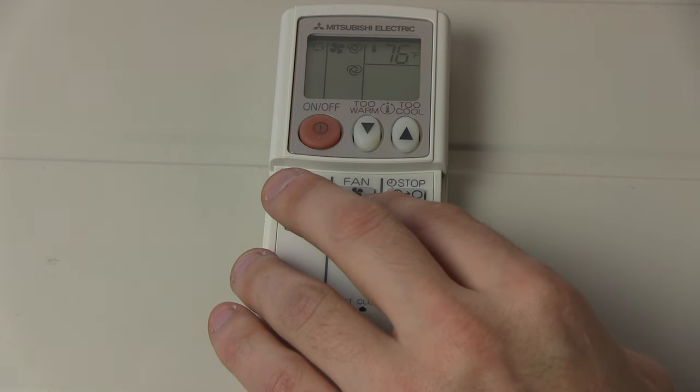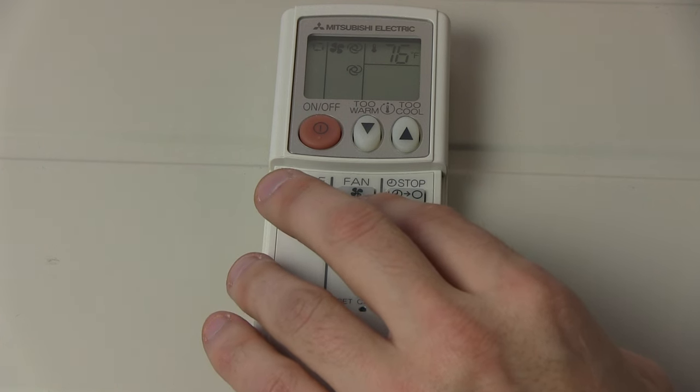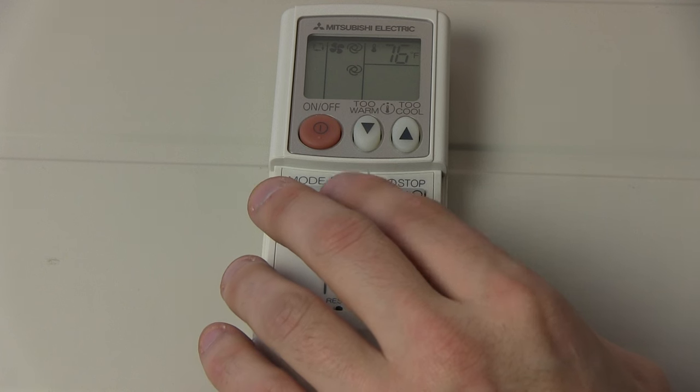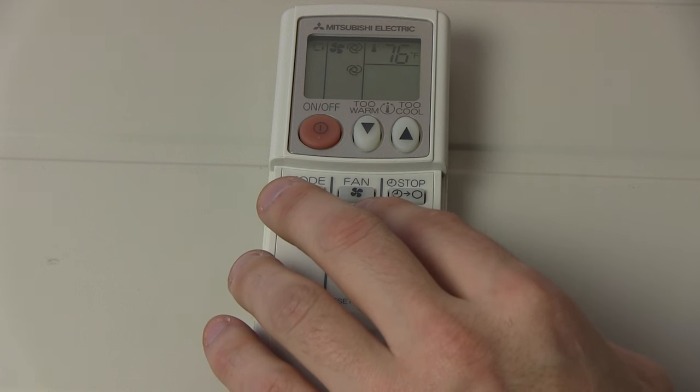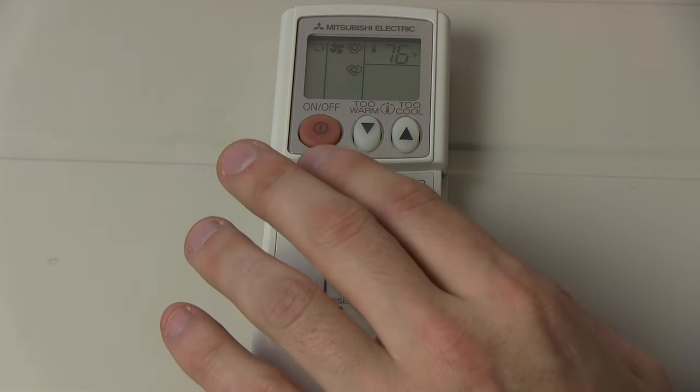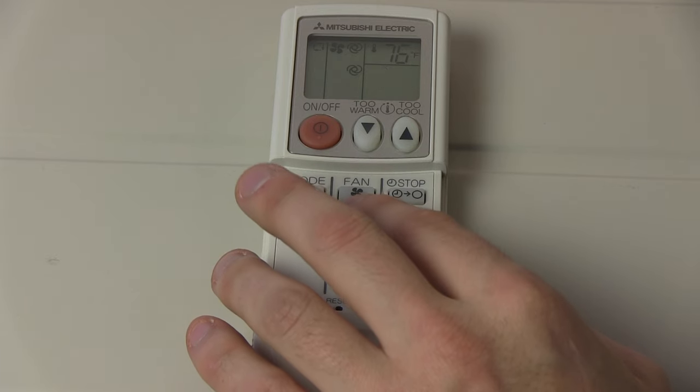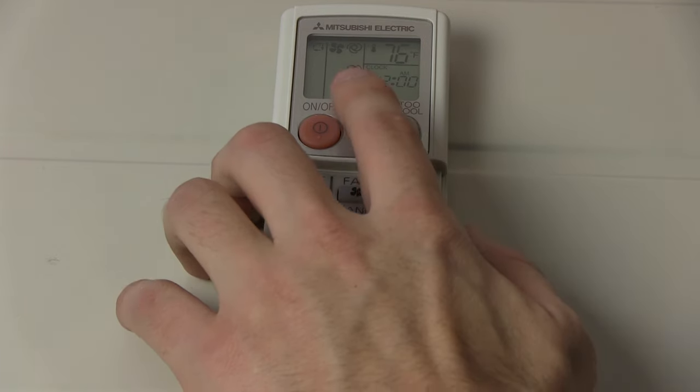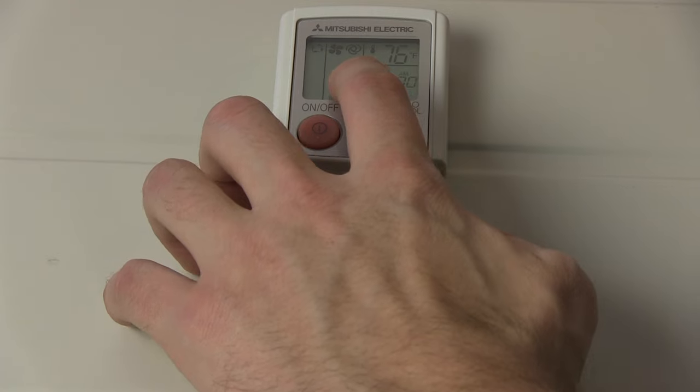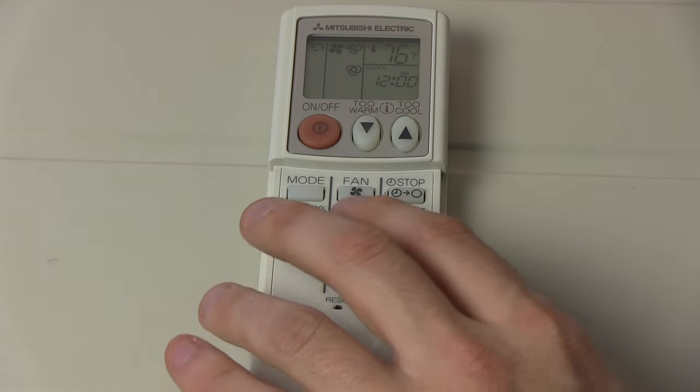Now, one of the more commonly used buttons that I like to talk about is the vane button. The vanes can be set to either blow out and up into the room, or it can be set to blow down. Right now, our vane position is set to what I refer to as the whirlwind or an auto mode.